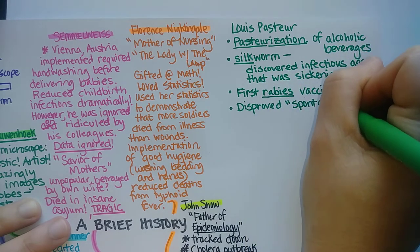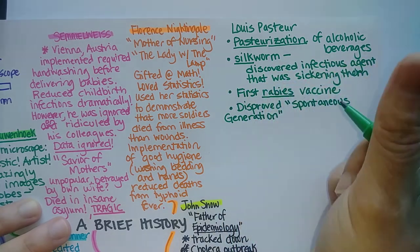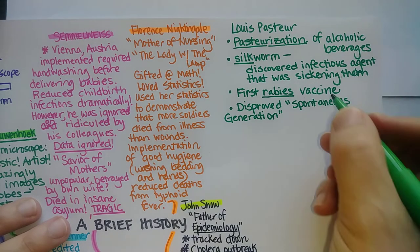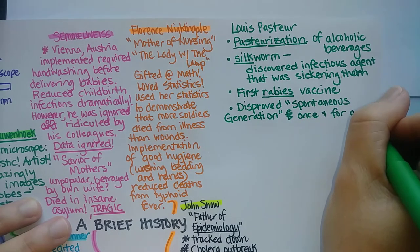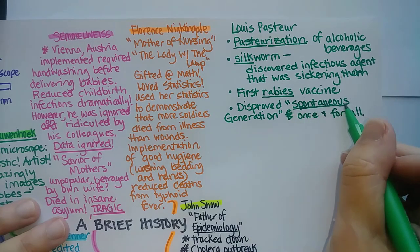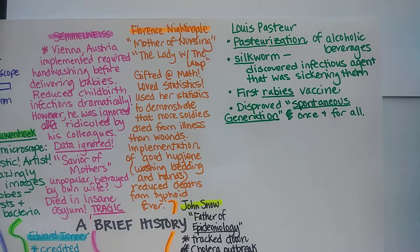He also disproved a theory called spontaneous generation with a very carefully designed experiment. The idea was that if you had beef broth on your counter and left it out for a week, it would become rotten. What was actually happening is that microbes were falling into it from the air and growing in the broth, feeding on the amino acids, until their population got so large it spoiled the broth. The old theory said that the rottenness arose spontaneously, without microbes as the cause.